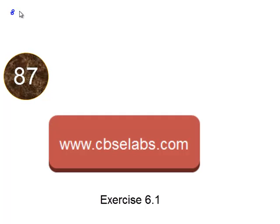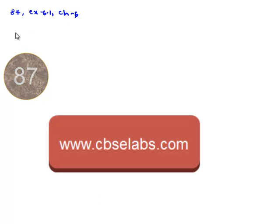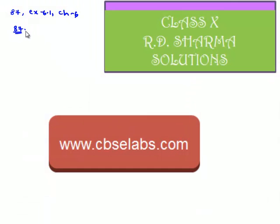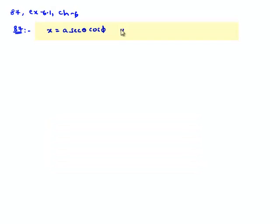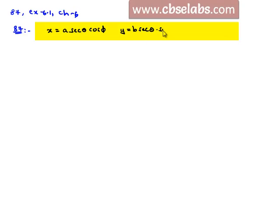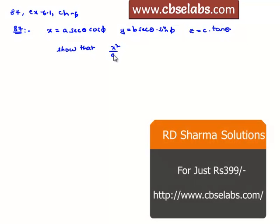Let us solve the 87th question from exercise 6.1, chapter 6. The question is: given that x is equal to a secant theta cos phi, y is given as b secant theta sin phi, and z is given as c into tan theta, and asks us to show that x square by a square plus y square by b square minus z square by c square is equal to 1.